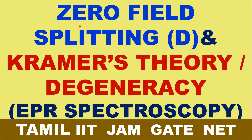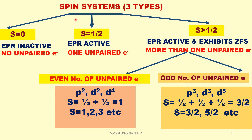Good morning. Zero field splitting — what is it? It is represented by symbol D. Next, what is Kramers degeneracy, or Kramers theory in EPR spectroscopy? Before we understand what is zero field splitting, let us study about spin systems.